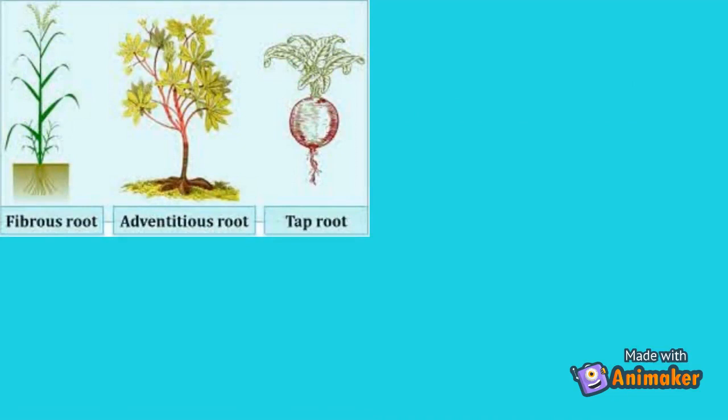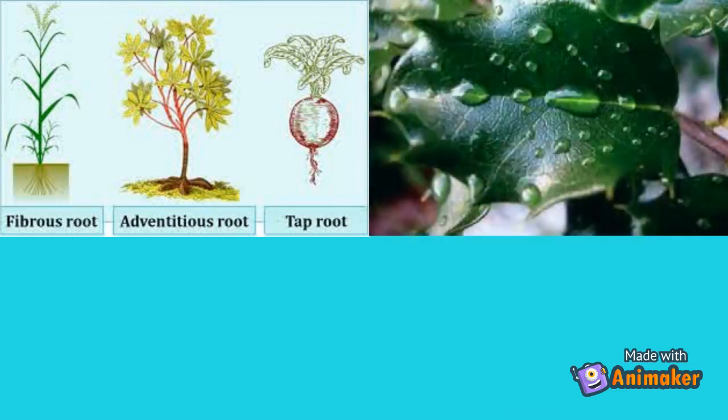taproot system, adventitious root system, or a fibrous root system. They use their root system to absorb water and nutrients from soil and to anchor the plant to the ground. They have special adaptations such as having a thick